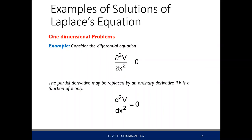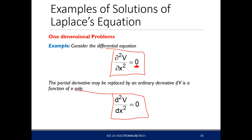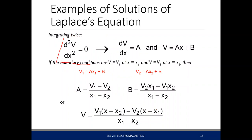Consider the one-dimensional problem. There is no charge in the region, so by Laplace's equation the Laplacian of V in one dimension becomes zero. Since it's just a derivative in one variable, the partial derivative becomes an ordinary derivative. We can solve for V as a function of x by integrating twice: dV/dx becomes a constant A, and integrating again gives V equal to ax plus b.